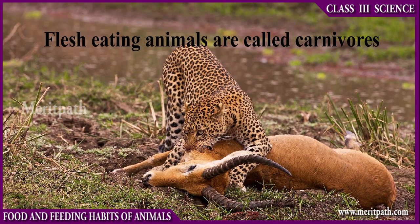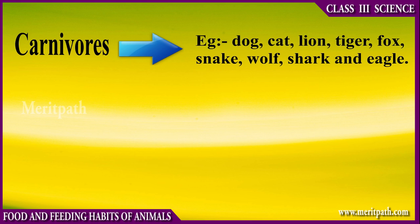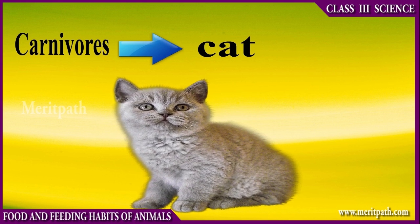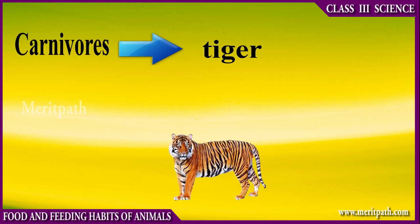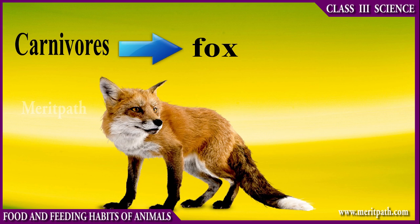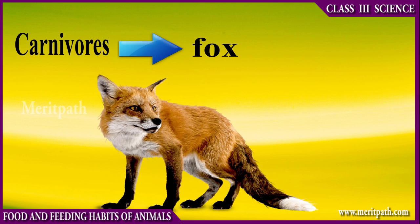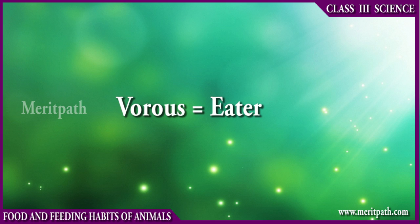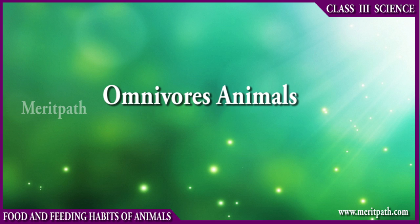Carnivorous animals are those animals which depend on the flesh of other animals for their food. For example, dog, cat, lion, tiger, fox, etc. Carni means flesh and voris means eater.